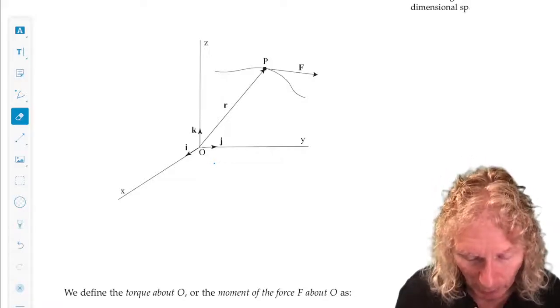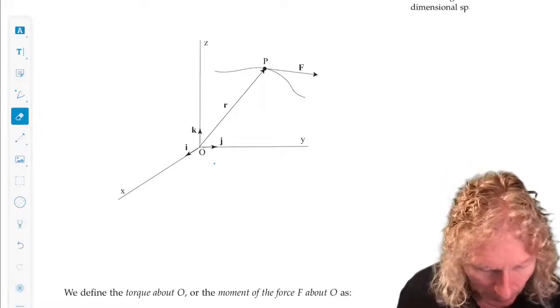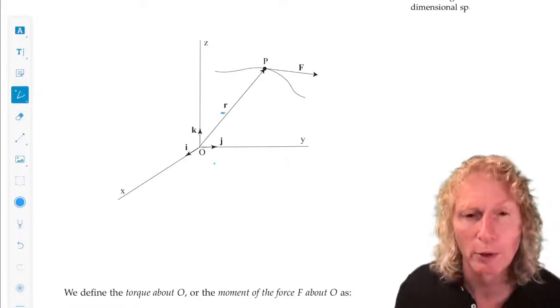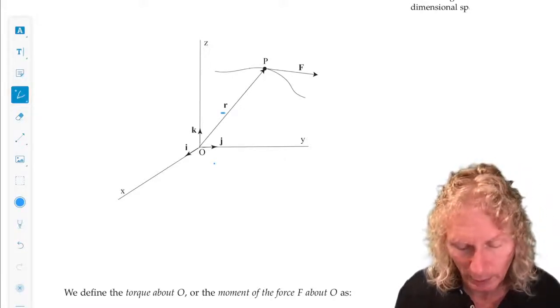We have a position vector from the origin O that locates the particle. So the position vector is R, the usual notation, and the particle moves under the action of a force F.